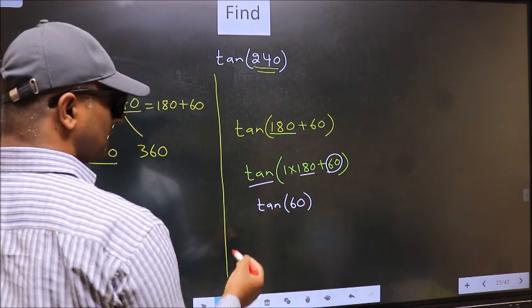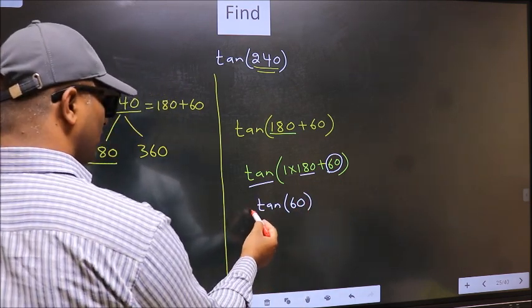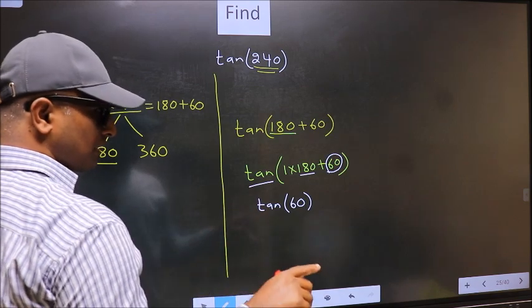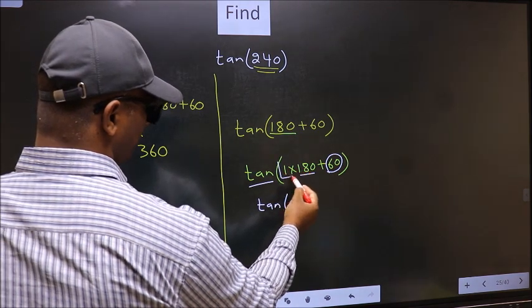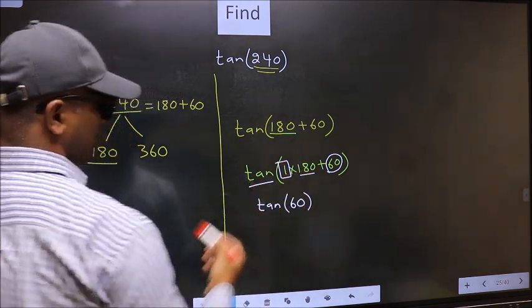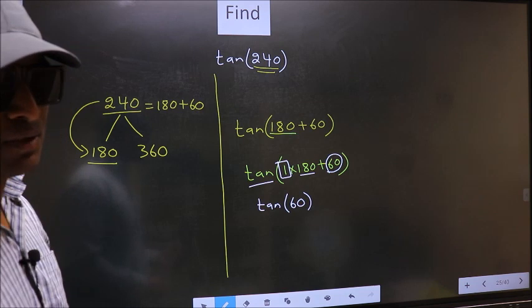Now, the question is, will we get here plus or minus? To answer that, we should look at the number before 180. That is 1, and 1 is odd.